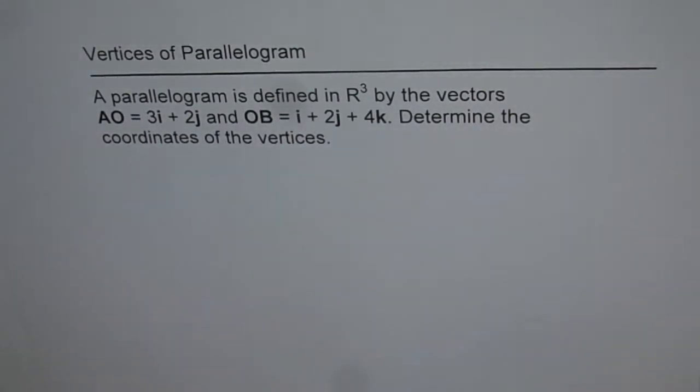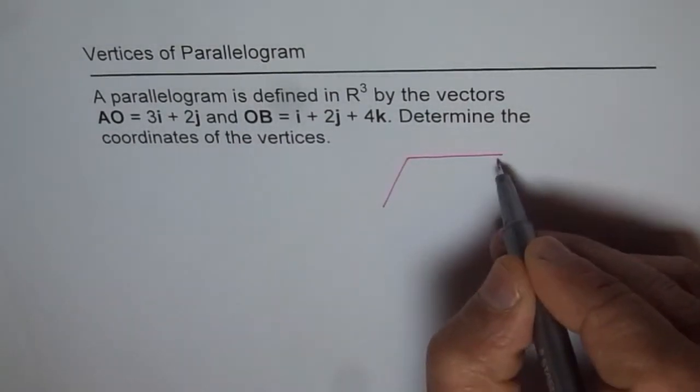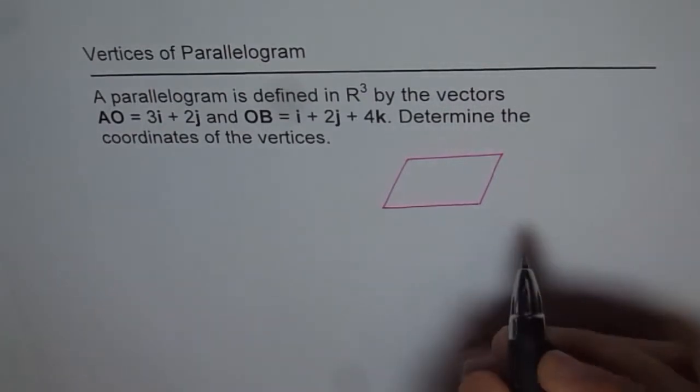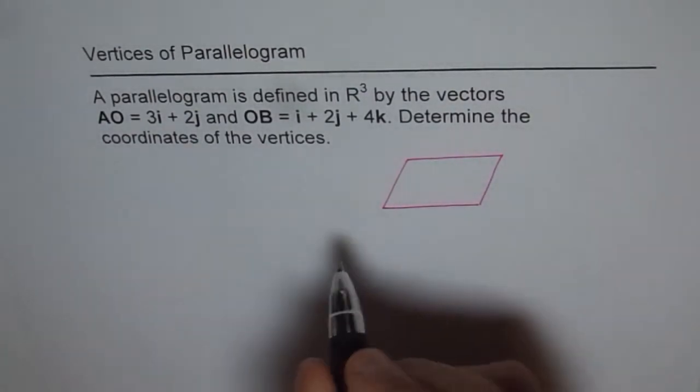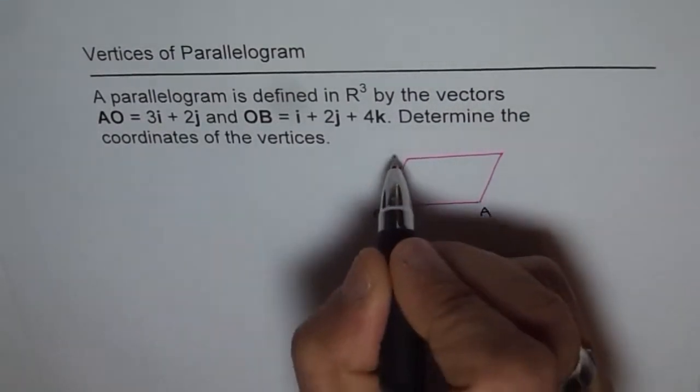This is a vector addition problem and we can just sketch a parallelogram. My suggestion is don't bother to see where point A or B is, just sketch a parallelogram and label the points. When we say OA, OB, let's put O for the starting point and then this is A and this is B.